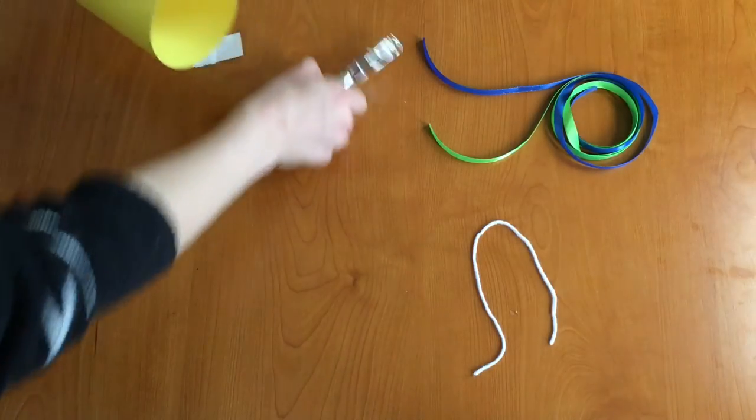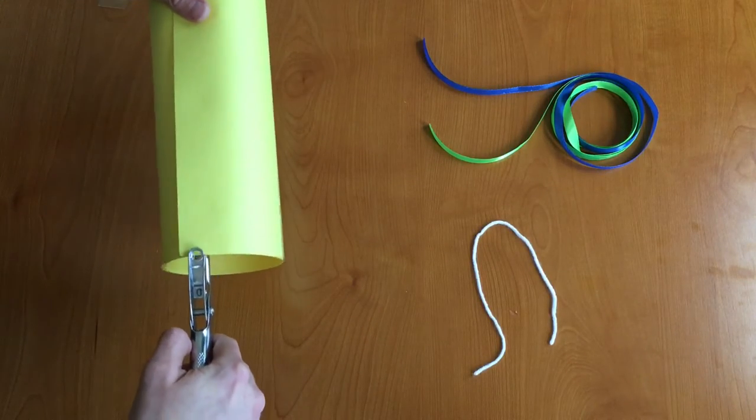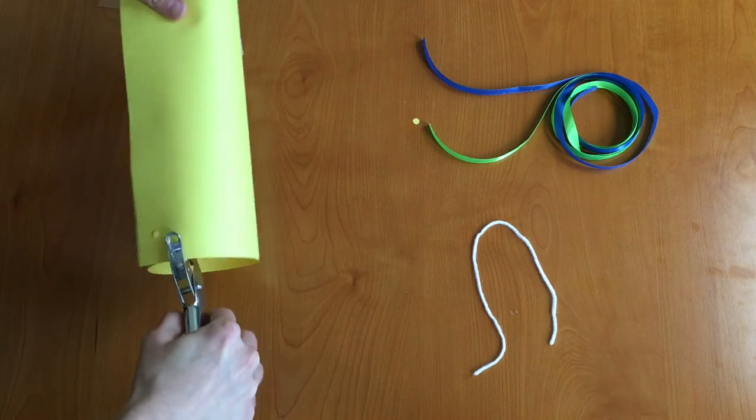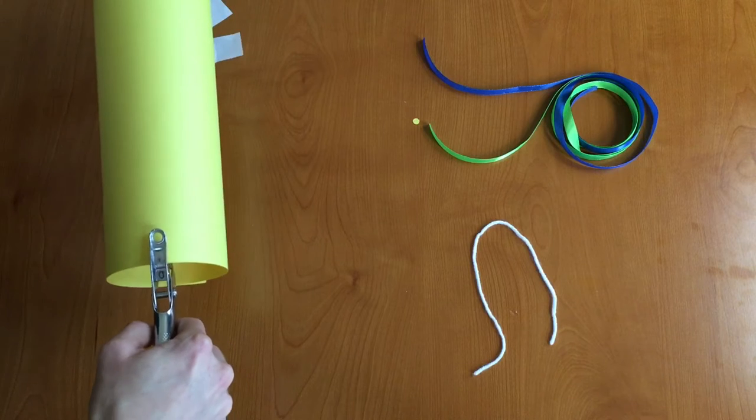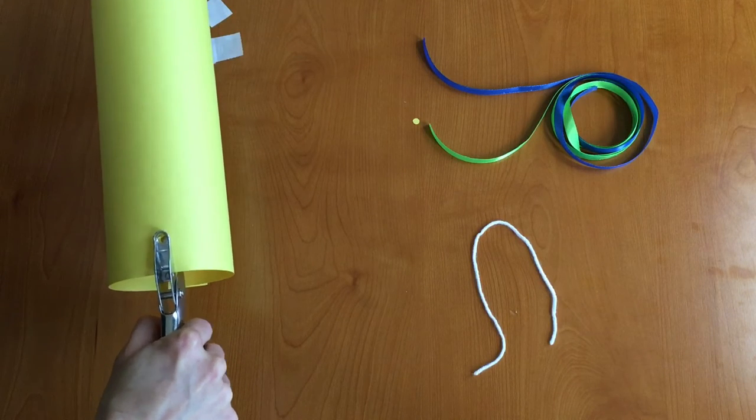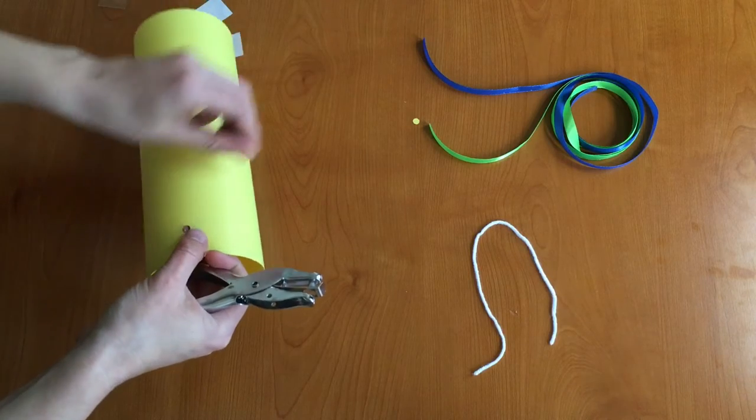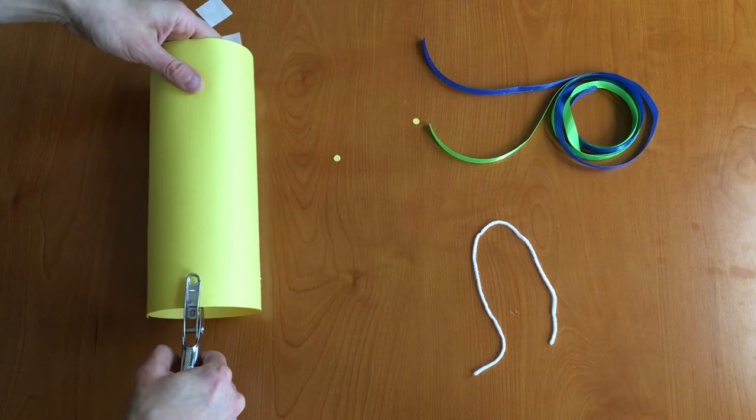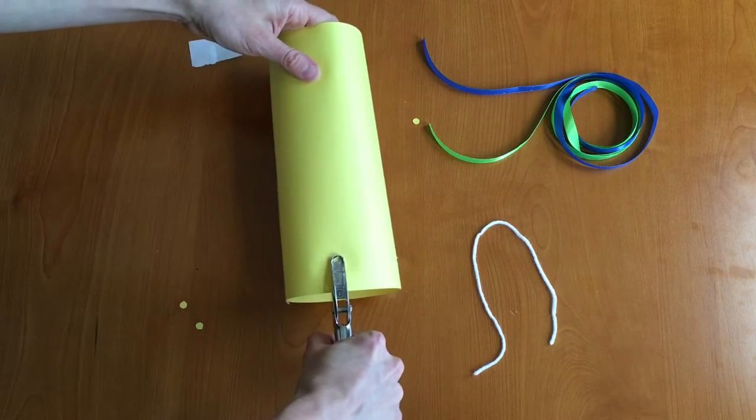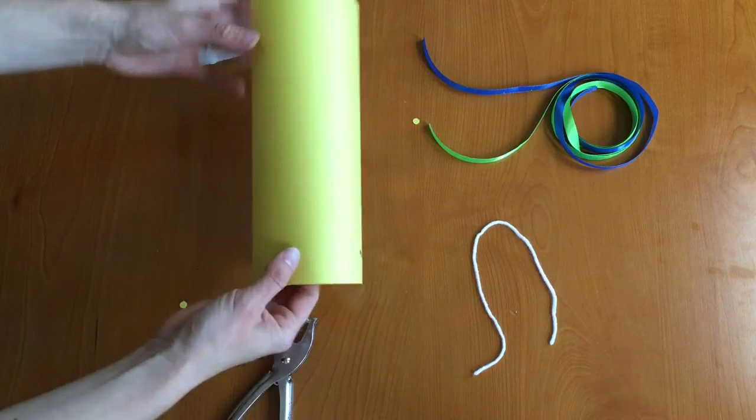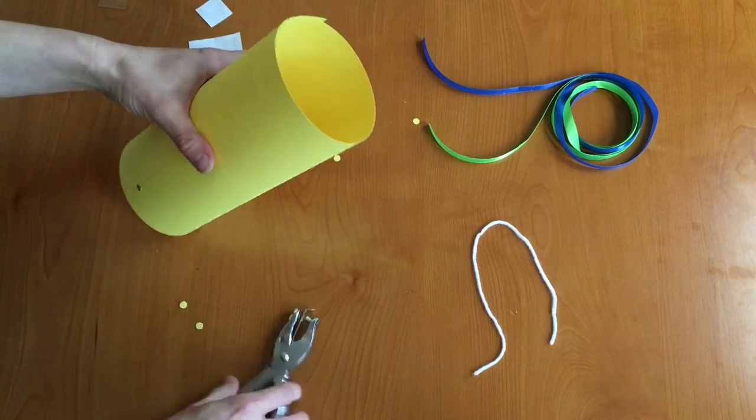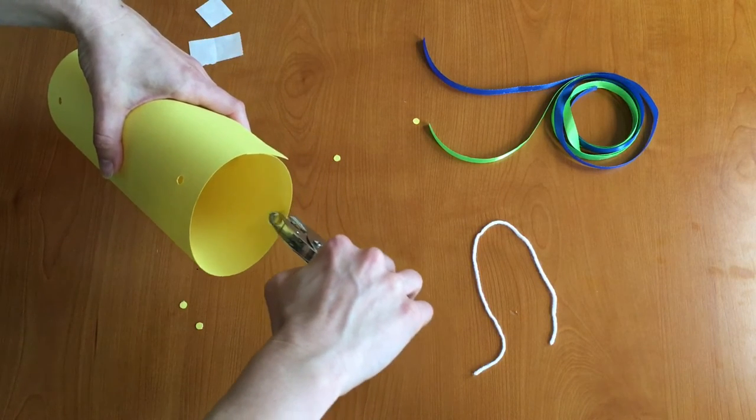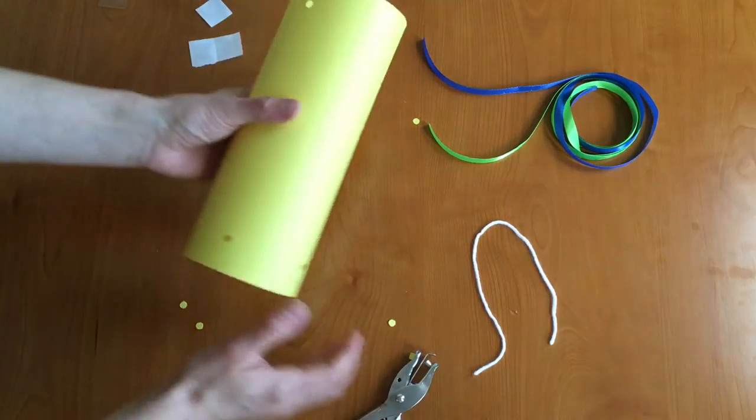Next what you're going to do is you're going to take your hole punch and you're going to punch four holes at the bottom of your wind sock. So one, two, three, and four. You're also going to punch two holes at the top of your wind sock. So one, two, there we go.